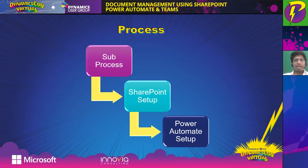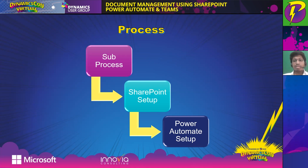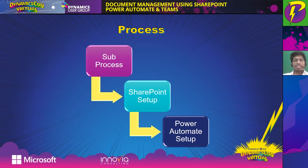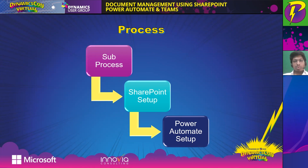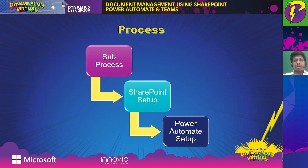Our process is divided into two sub-processes: SharePoint setup and Power Automate setup. We'll first begin with the SharePoint setup. I'll show you the site deck which explains how we'll set up document libraries and enable content approvals, so you get an idea of how the process works. Once each process completes, I'll show you a complete demo of what we saw in the slide deck.